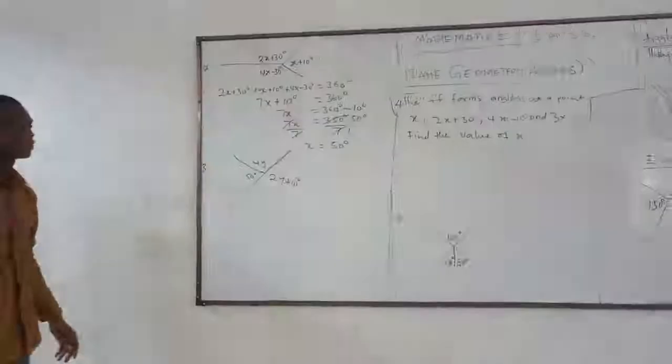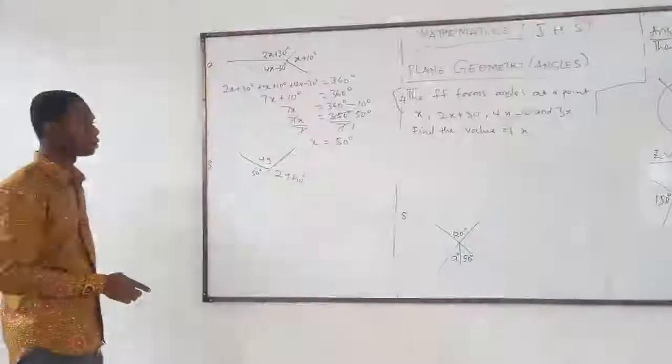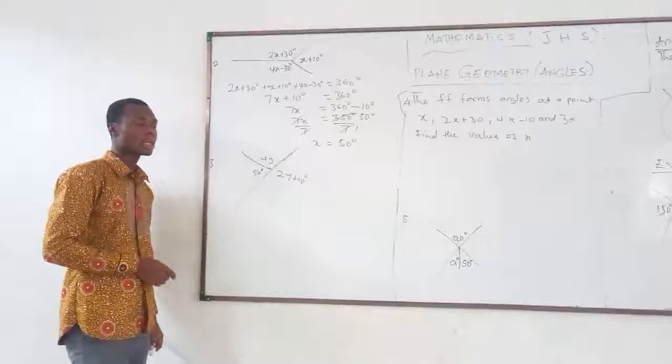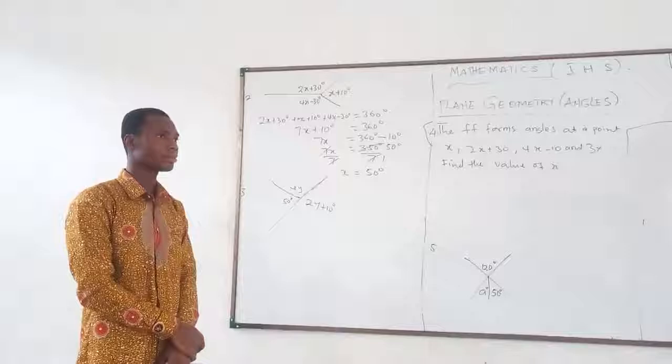The third example: you have 50 degrees, 4Y, and 2Y plus 10. Our task is to find Y. I know you can do it. We have 50 degrees plus 4Y plus 2Y plus 10 equals 360 degrees.